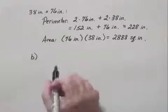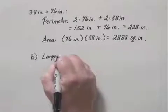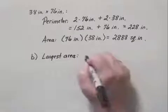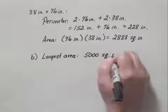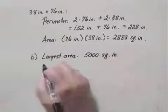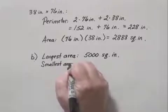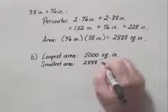We will do that by subtracting. The area of the largest table, if we look back at our work, was 5,000 square inches. And the area of the smallest table, which is the one we just found, was 2,888 square inches.